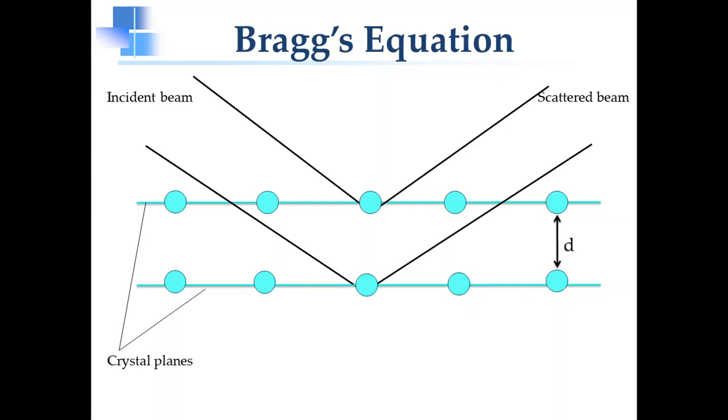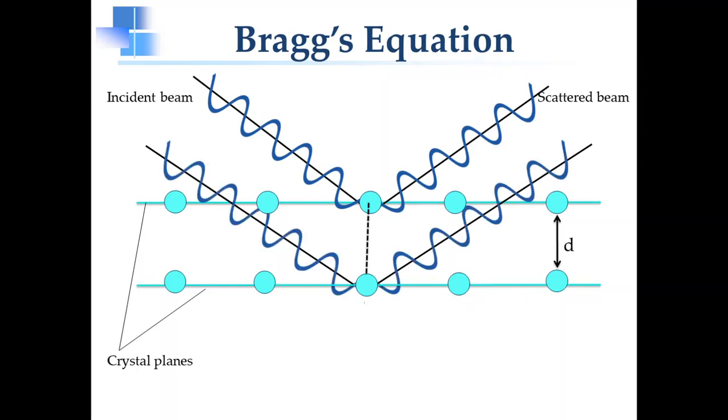When X-rays fall on atomic planes, X-rays are scattered by the regularly spaced atoms. When X-rays fall on the top layer, then both incident and scattered ray travel same distance. But when X-rays fall on internal layers, both incident and scattered ray travel some extra distance. Similarly, if the X-rays fall on the third layer, both rays have to travel some more distance.